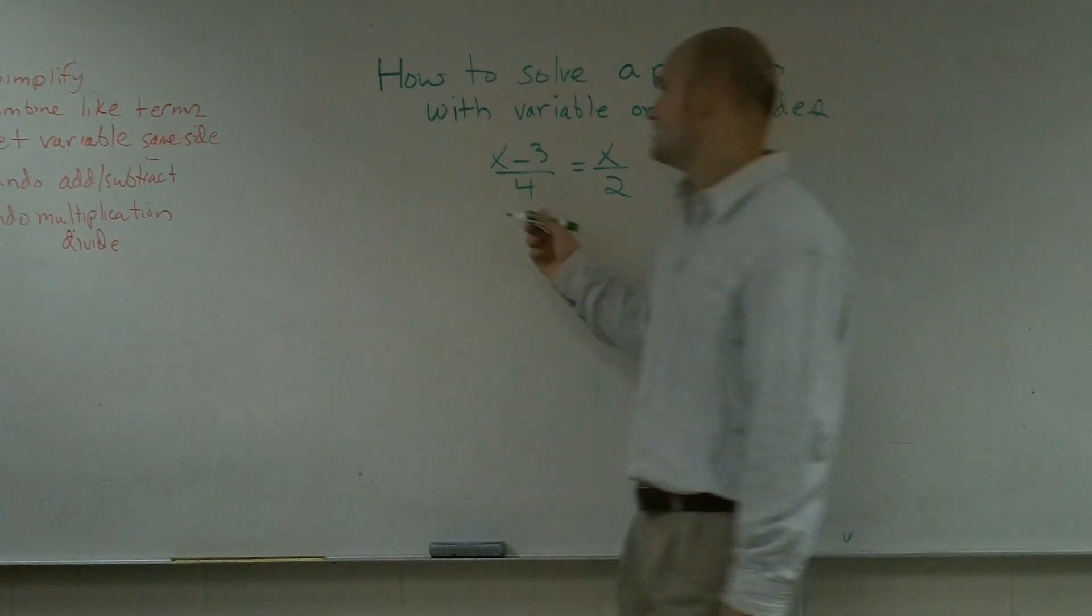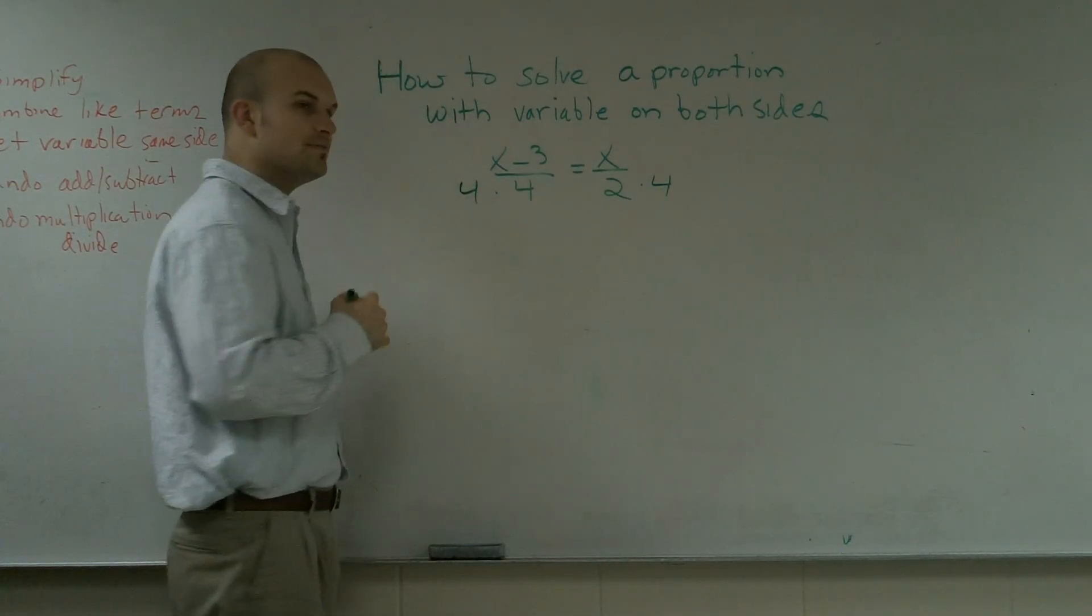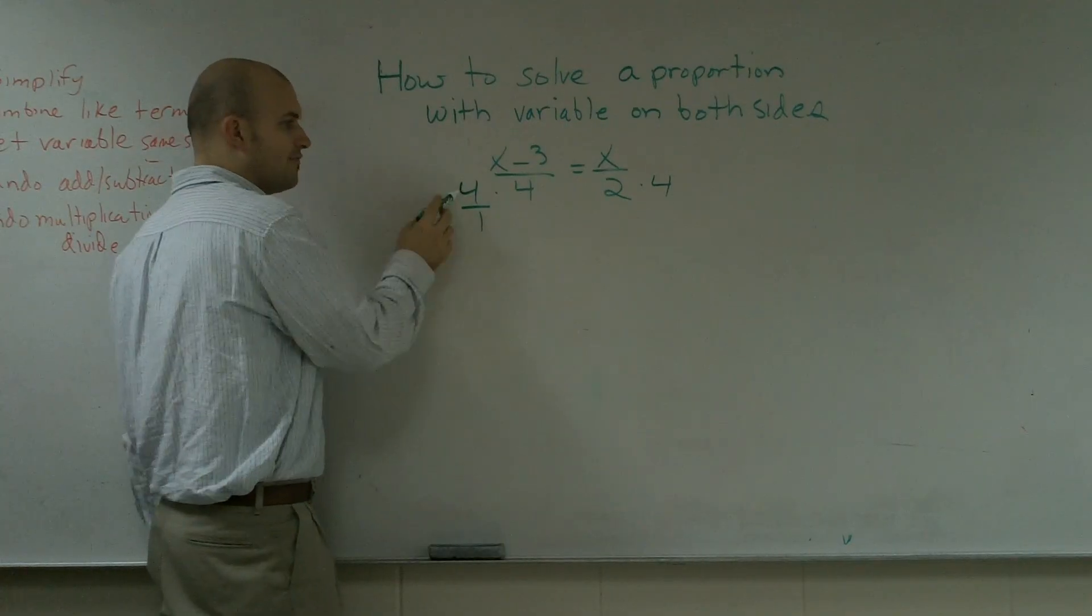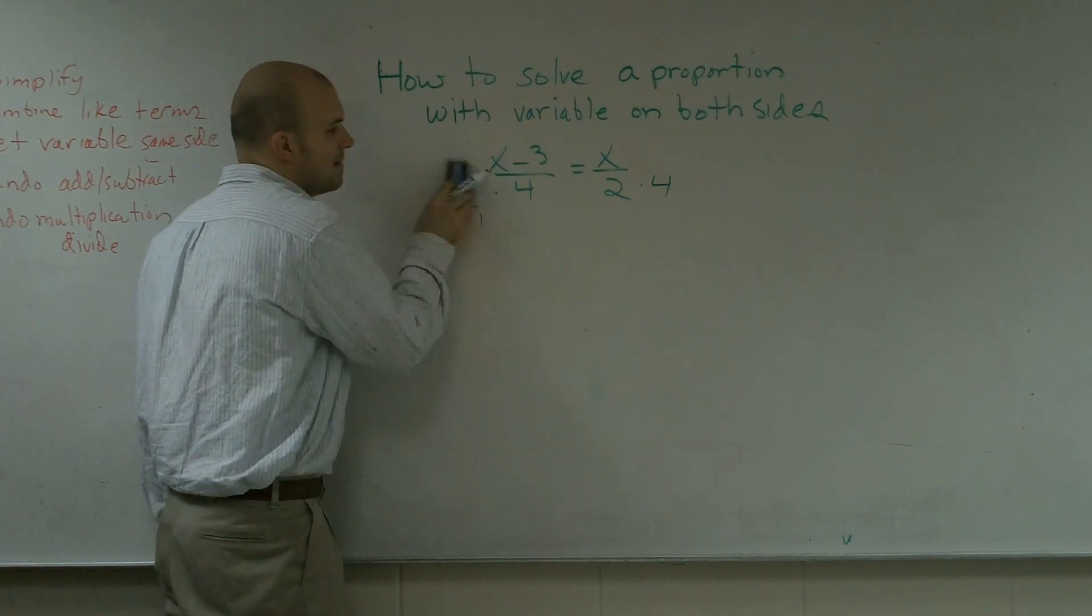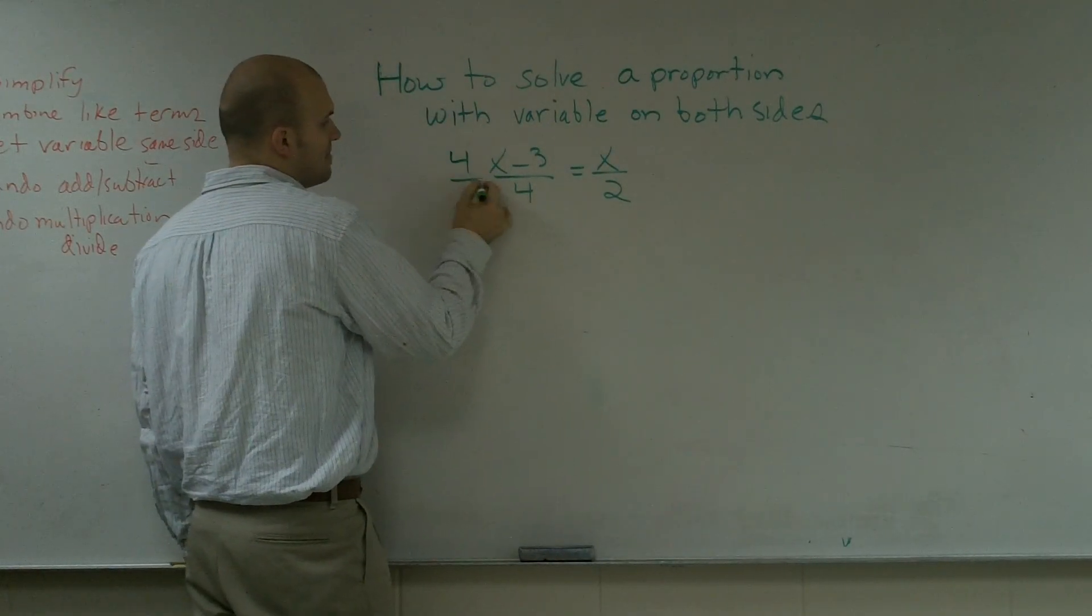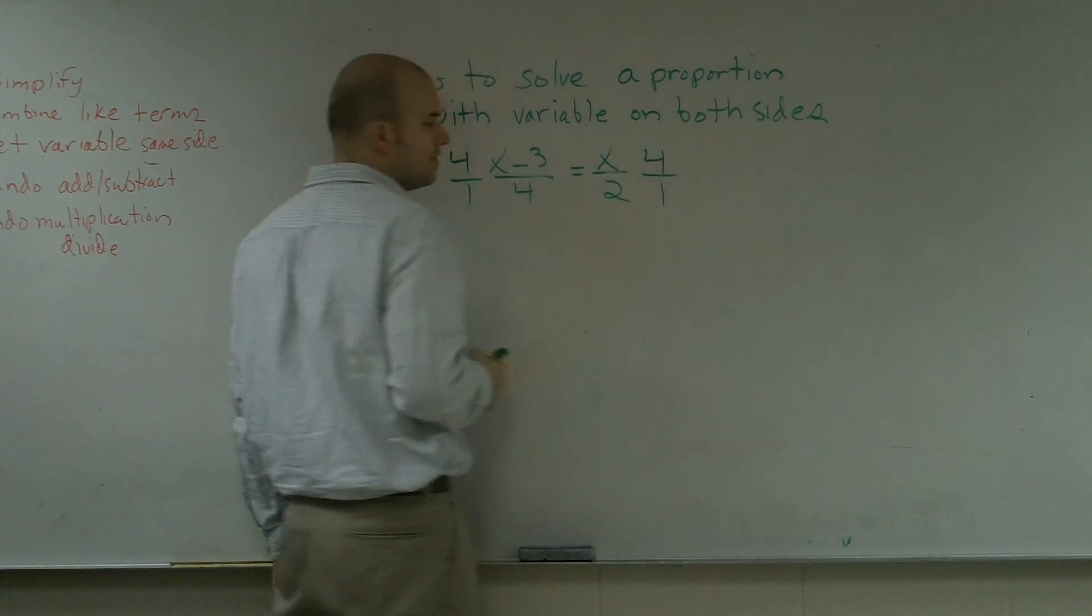Now, a big mistake that students make is they multiply by four and they multiply the denominators by four. You have to be careful. Remember, four can be represented as a fraction, where four would be your numerator and one would be your denominator. So when I'm multiplying by four, I need to make sure I multiply by four over one, so I'm only multiplying the numerator.